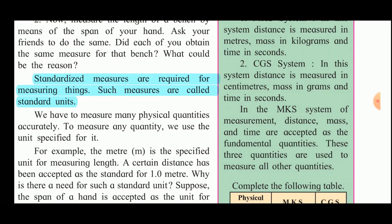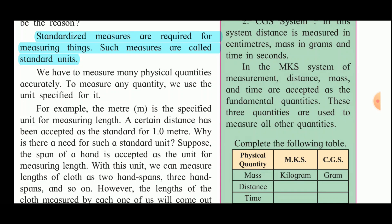Standard units include meter, centimeter, kilogram, grams, Fahrenheit, and degree Celsius. These are accepted all over the world. When we say one meter of string, it means the same everywhere in the world. To measure any physical quantity accurately, we use the unit specified for it — for example, meter (denoted by small m) is the specified unit for measuring length.